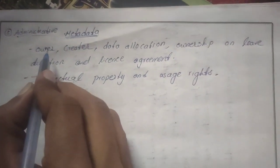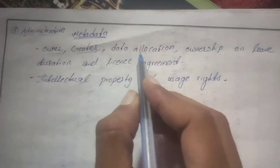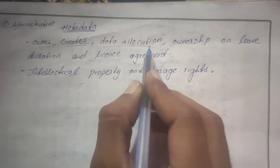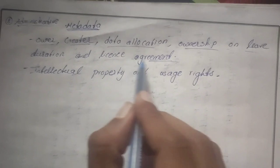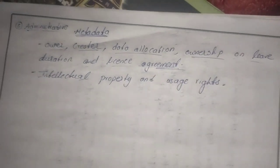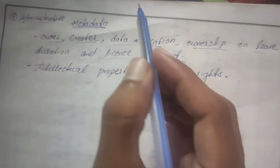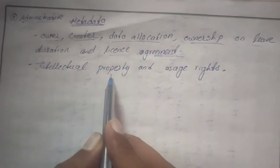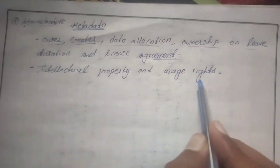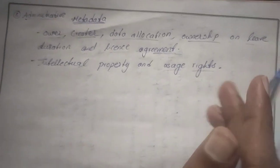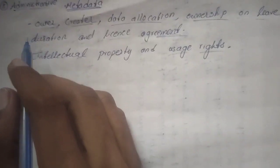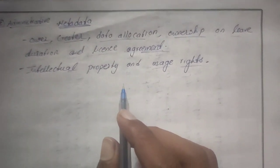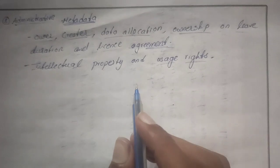Next, administrative metadata — this covers information about the owner or creators, data allocation, ownership, live duration, and license agreements. Intellectual properties and usage rights also come under administrative metadata. That's all about metadata and the types of metadata. Thank you.